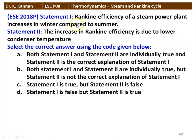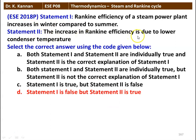There are two statements given. Statement 1: Rankine efficiency of a steam power plant increases in winter compared to summer. Statement 2: the increase in Rankine efficiency is due to the lower condenser temperature. The correct answer is: Statement 1 is false but Statement 2 is true. The increase in Rankine cycle efficiency due to lower condenser temperature — Statement 2 — is true. However, the season will not affect the efficiency of the Rankine cycle, so Statement 1 is wrong.